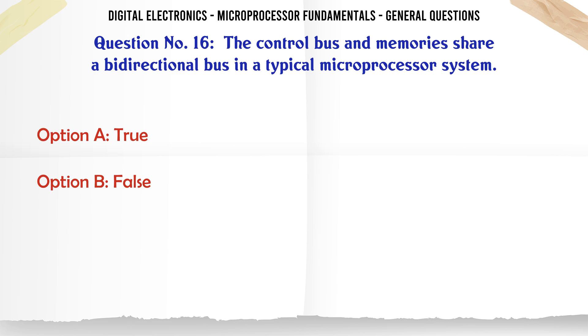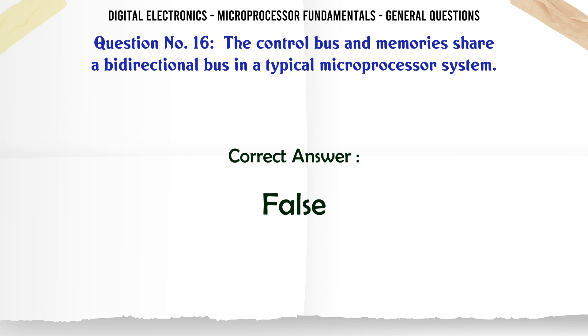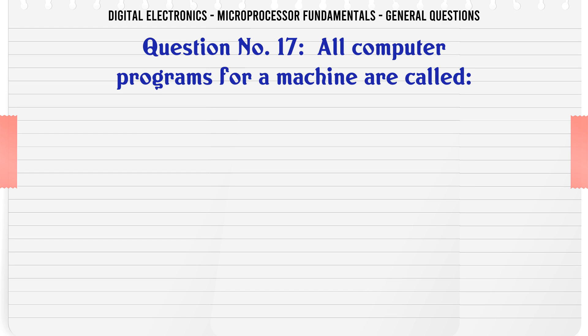The control bus and memories share a bi-directional bus in a typical microprocessor system. A. True, B. False. The correct answer is False.